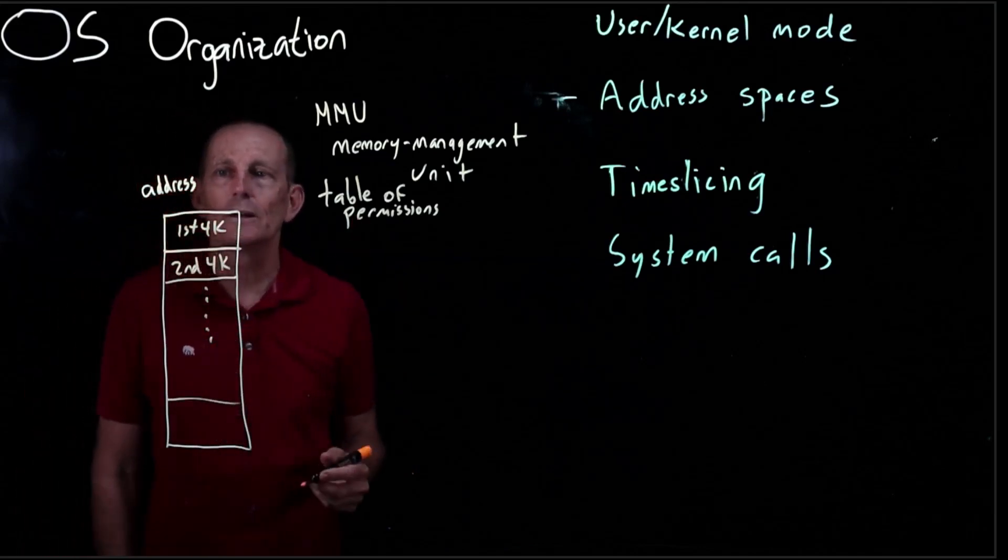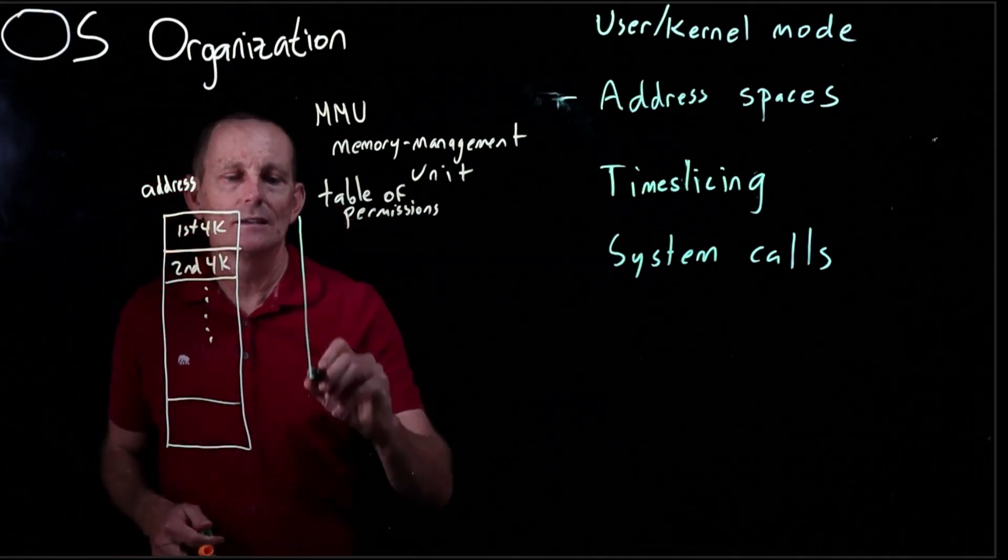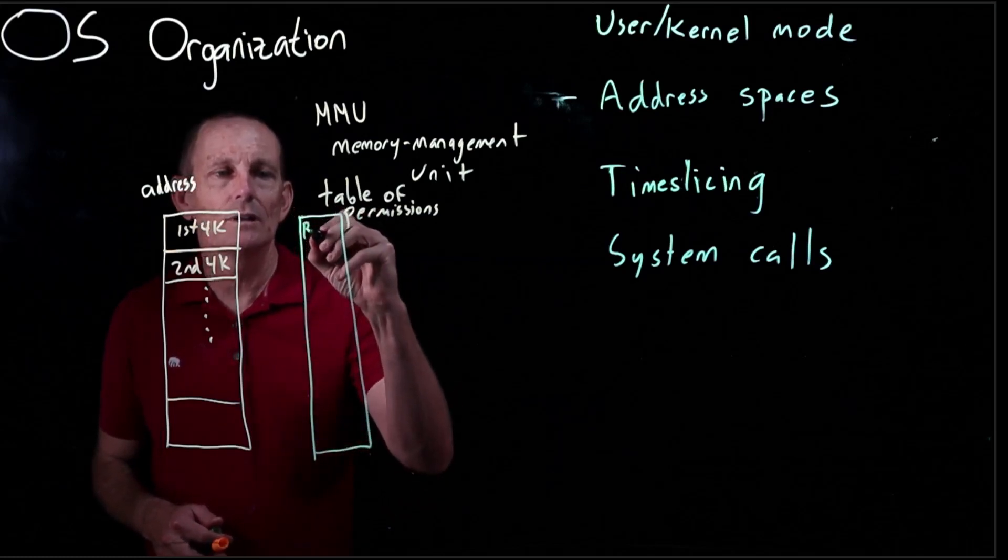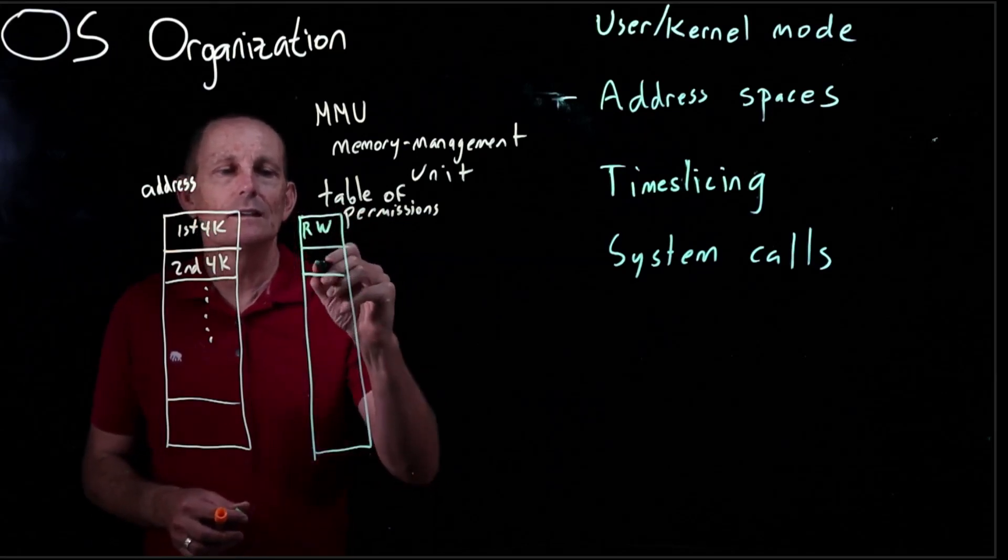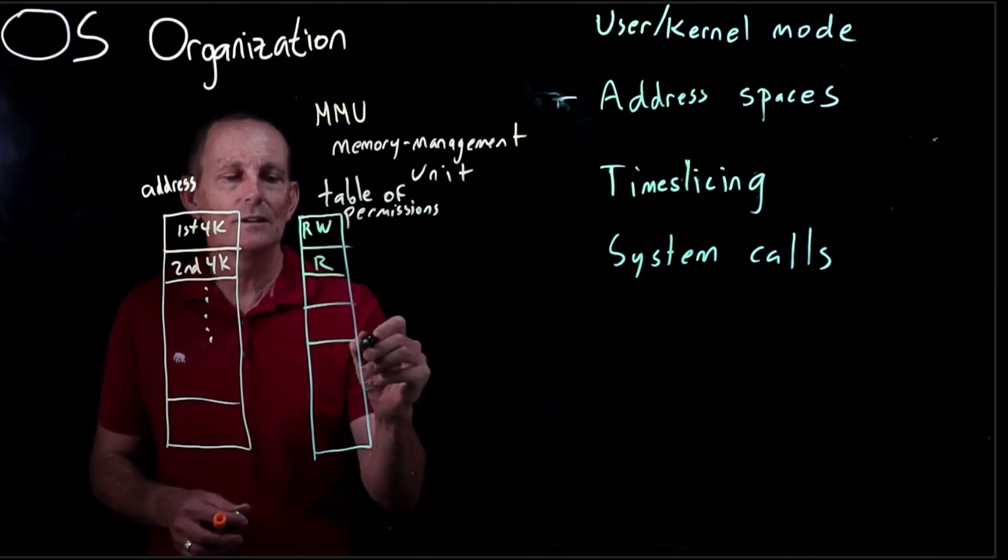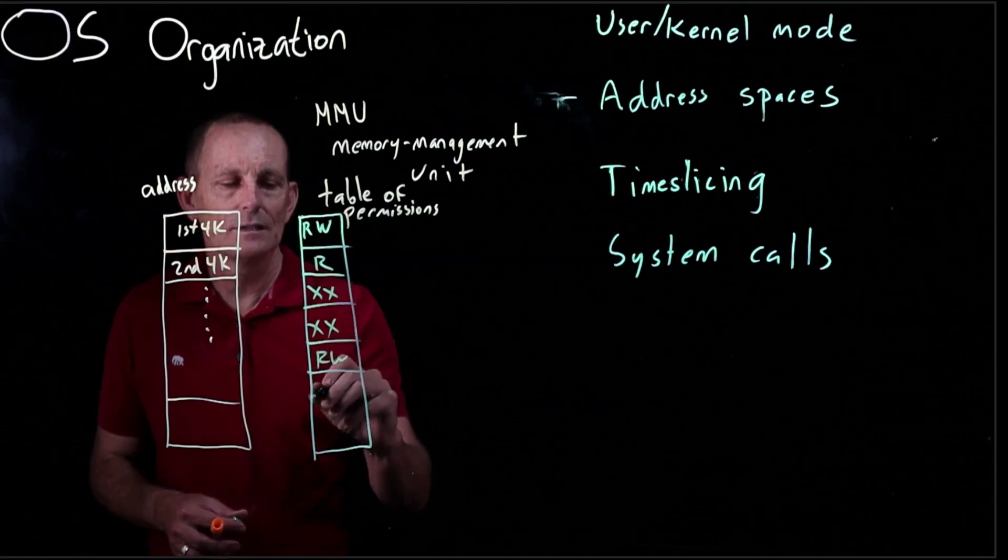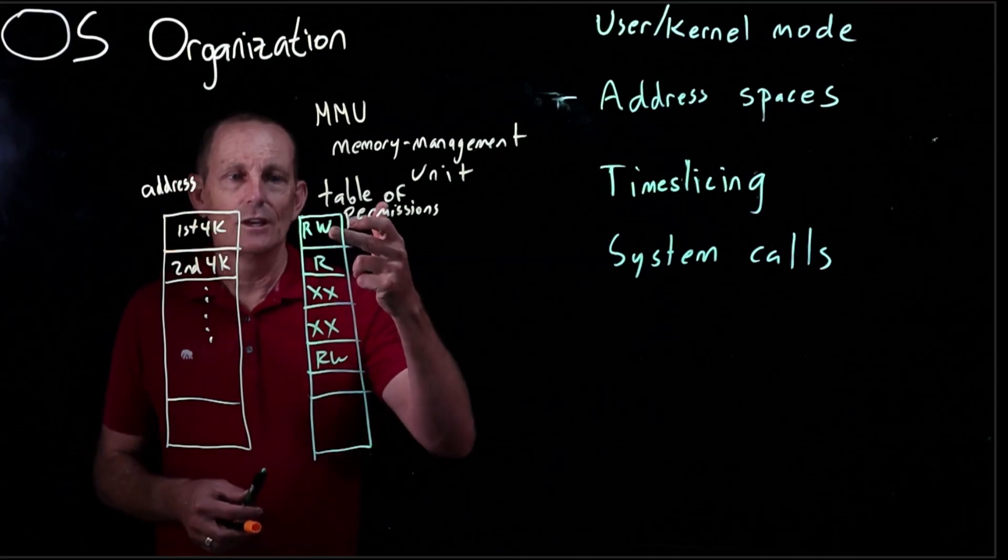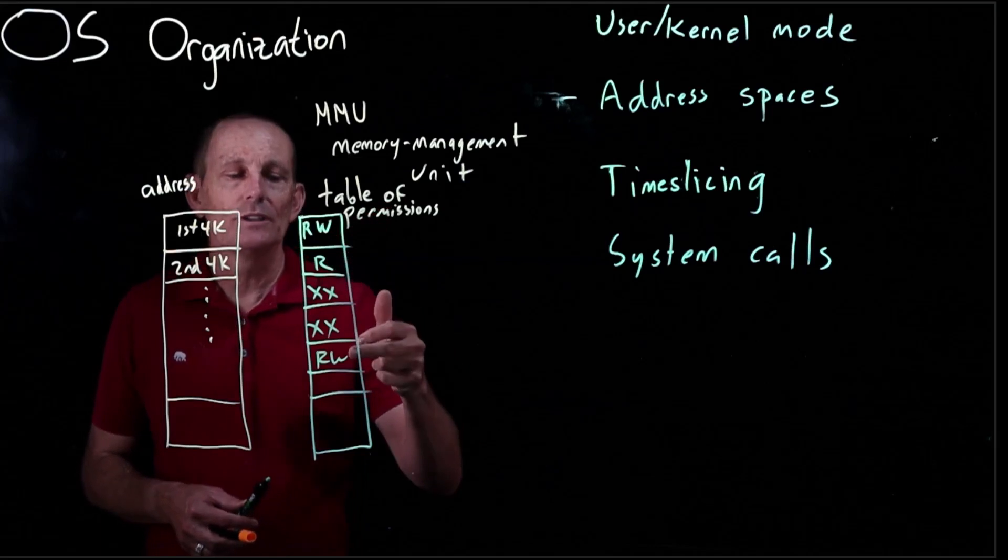That will allow us to have this table be smaller. And then what the table can do is just say two bits. Is this readable or is this writable? So this one could, for instance, be read-write. This one could be read. This one could be neither, neither, read-write, and so on. And so for process A, this read-write one might be the stack. This read one might be code. This read one might be global variables, and so on.